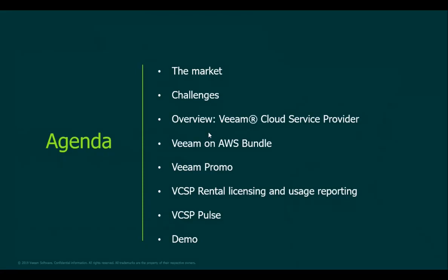We have something specific for AWS — a costing bundle so you can understand costs and avoid over-spending. We'll cover a special VCSP promo, rental licensing and usage reporting, how to create license files, and the VCSP Pulse tool introduced by Veeam to manage rental usage. There will also be a live demo of the Veeam Service Provider Console, and we'll end with a Q&A session.